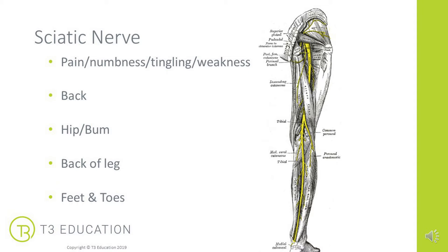Sciatic nerve impingement symptoms can be pain, numbness, tingling, or weakness — any of those nerve-like symptoms in any of those areas, from the impingement downwards. It's really important that we discuss any of those nerve-like symptoms with the client and ensure that they're referred for proper diagnosis.